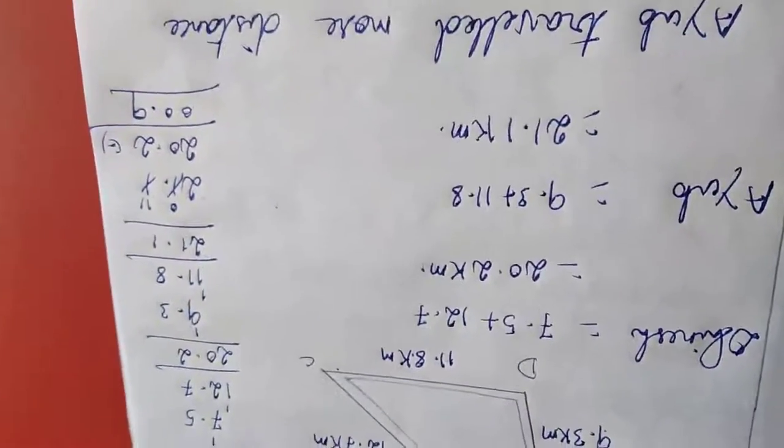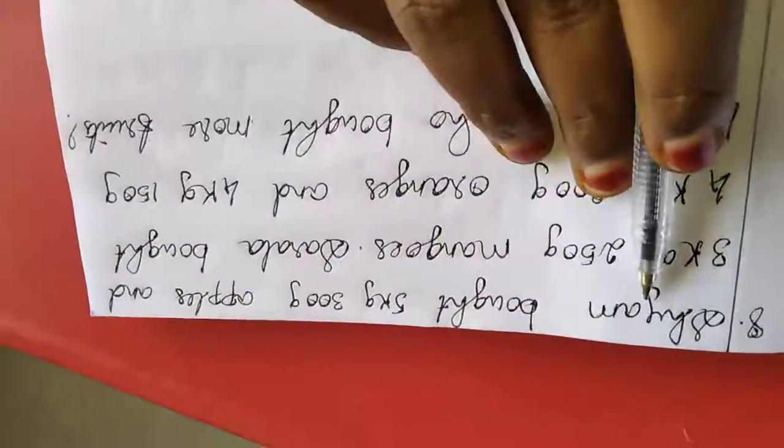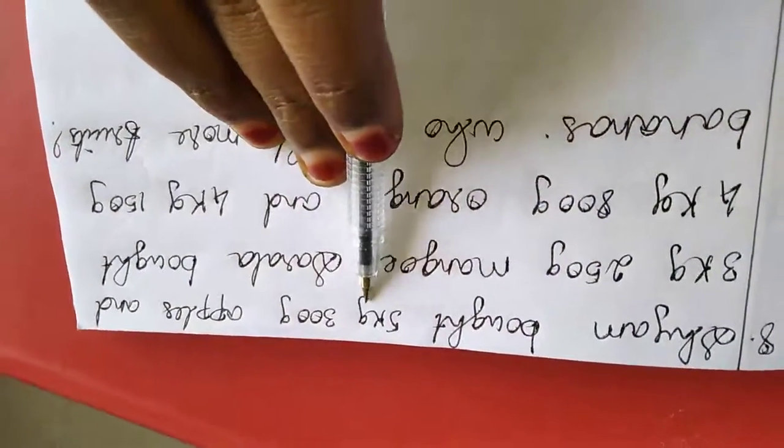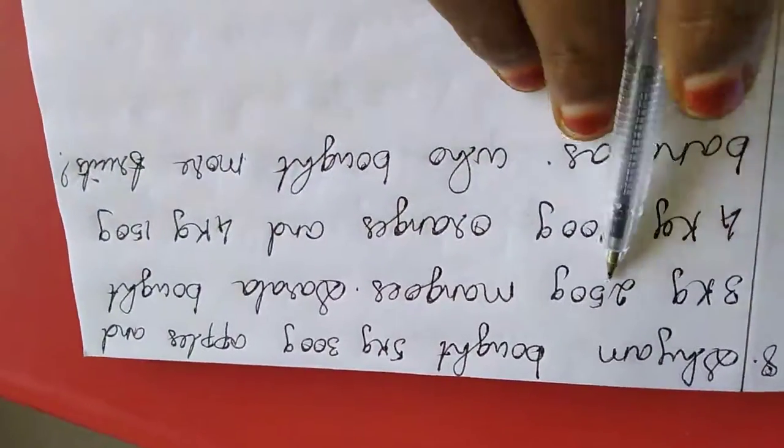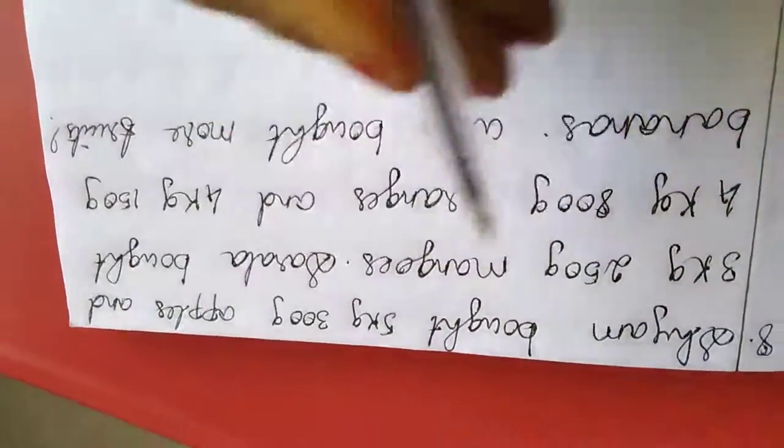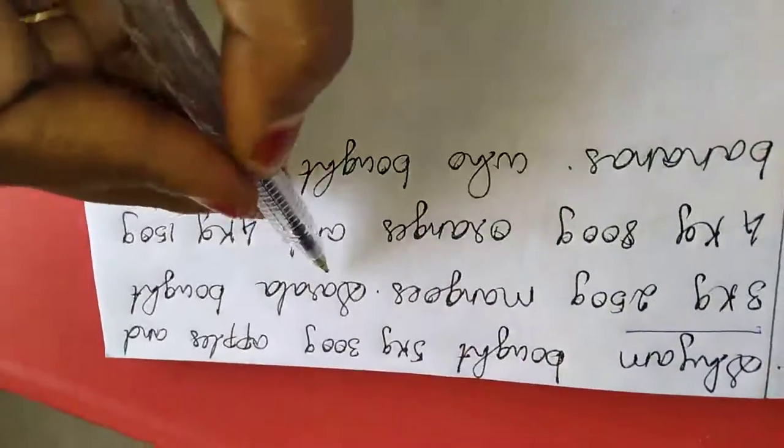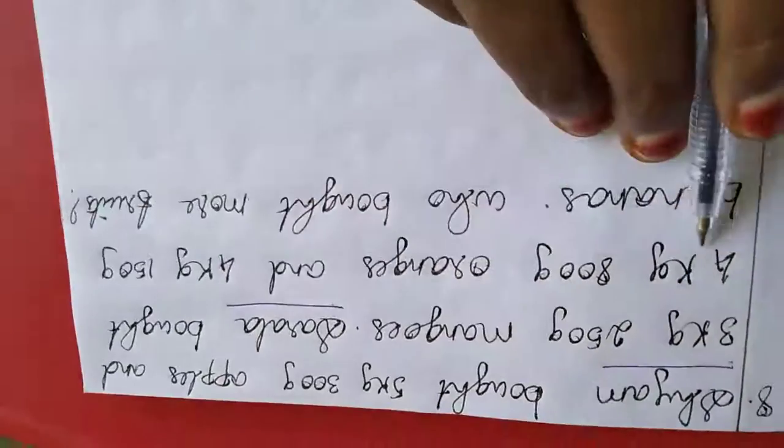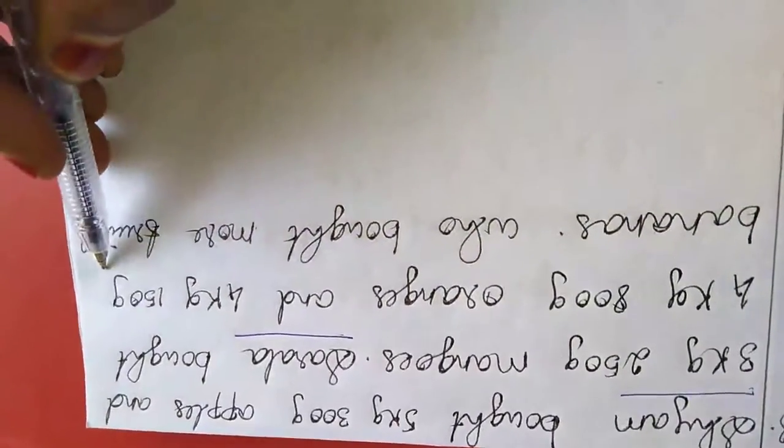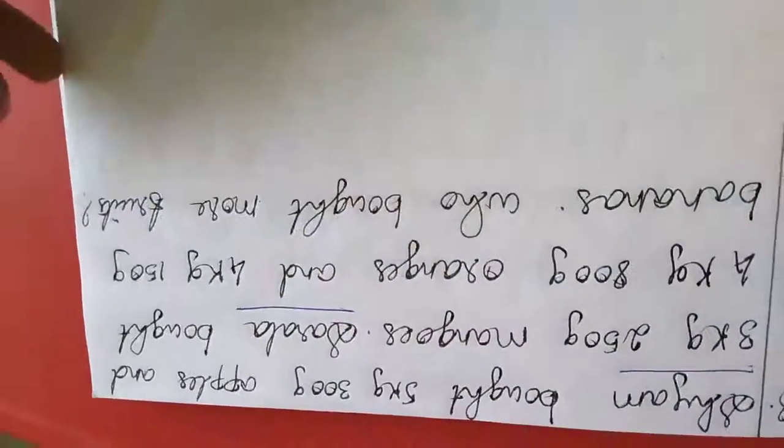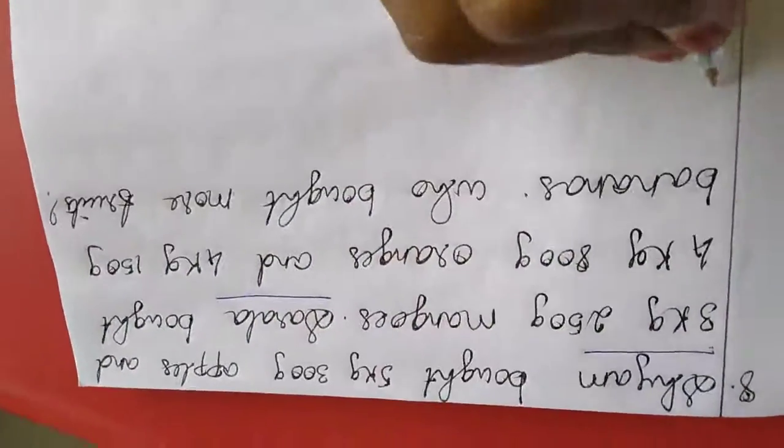We will move to the 8th sum. Sham bought 5 kg and 300 gram apples and 3 kg, 250 gram mangos. This is Sham. Next, Sarala bought 4 kg, 800 gram oranges and 4 kg, 250 gram bananas. Who bought more fruits?